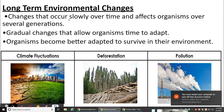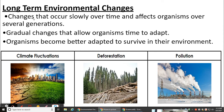Now we're going to look at long-term environmental changes. These changes occur slowly over time and affect organisms over several generations. They are gradual changes that allow organisms time to adapt, so organisms become better adapted to survive in their environment. Examples include climate fluctuations like global warming, deforestation, and pollution.